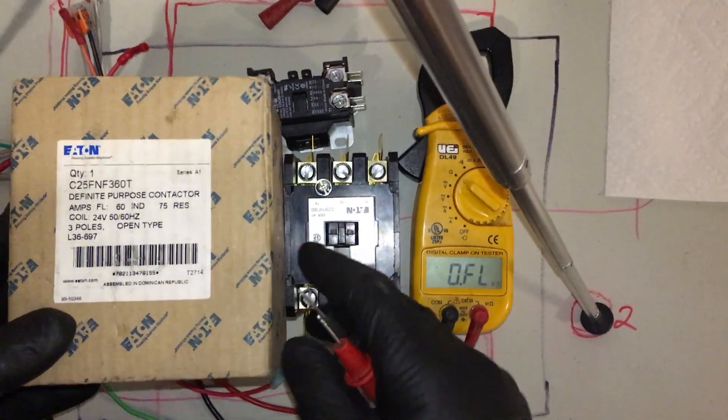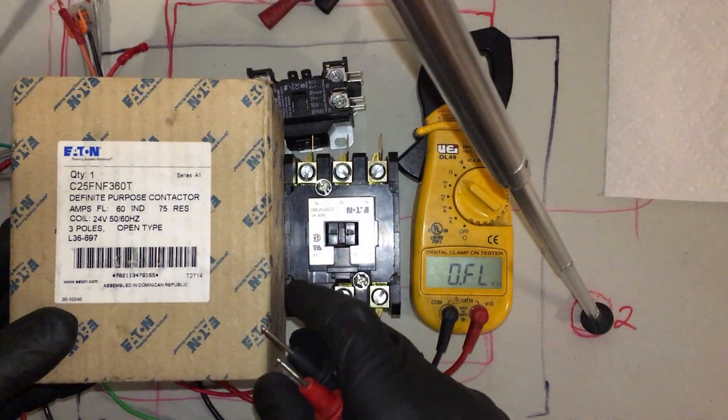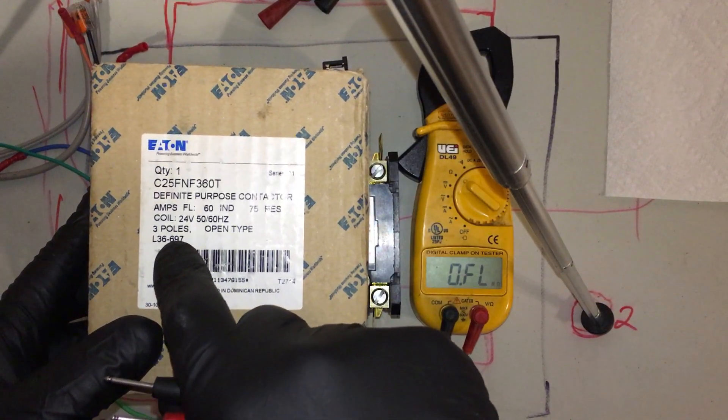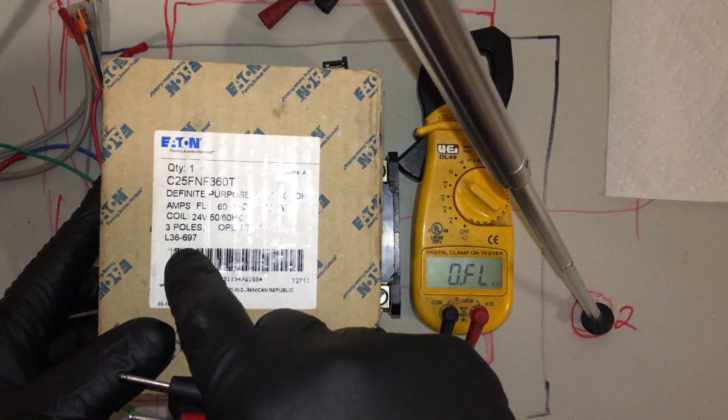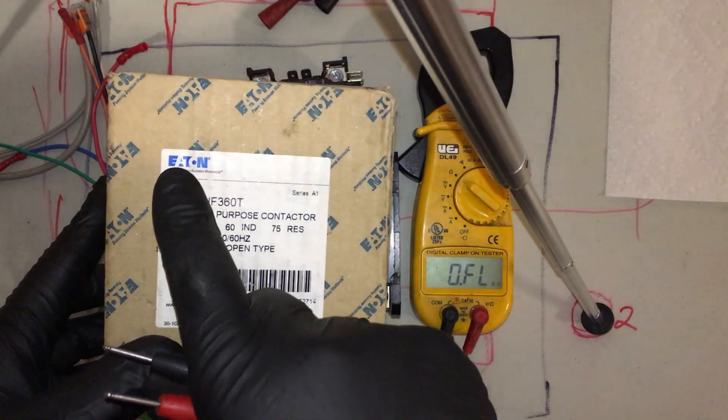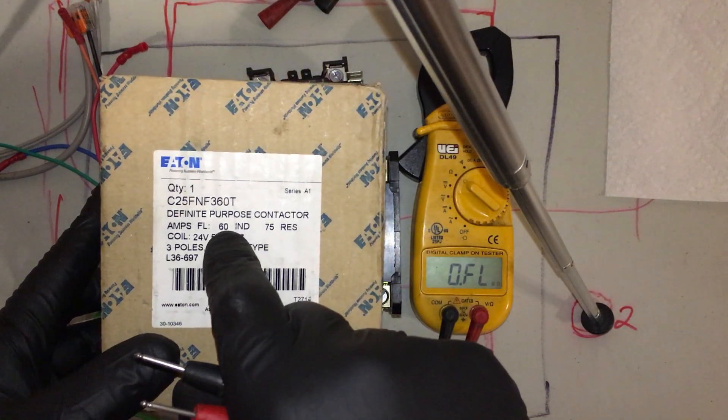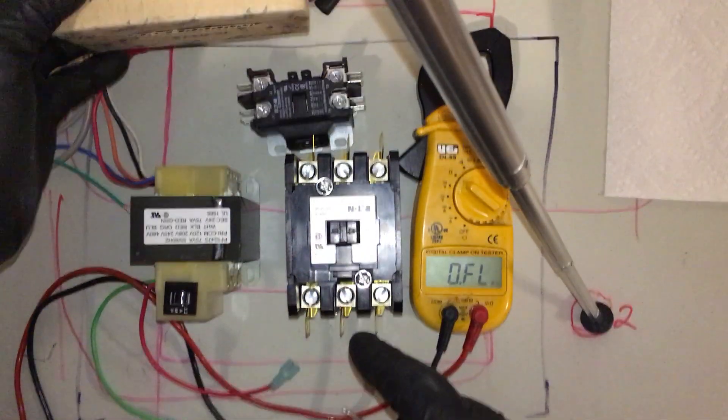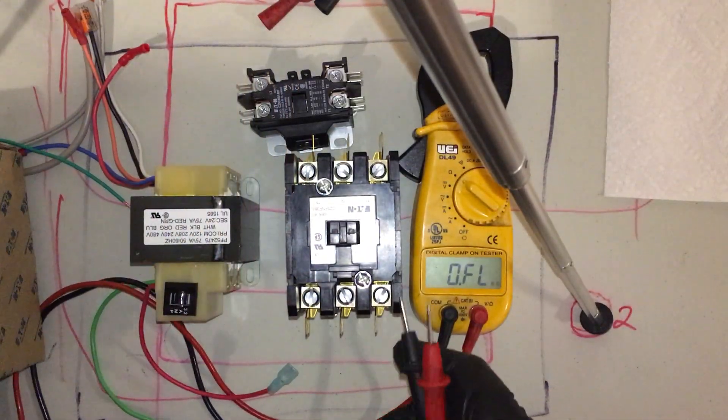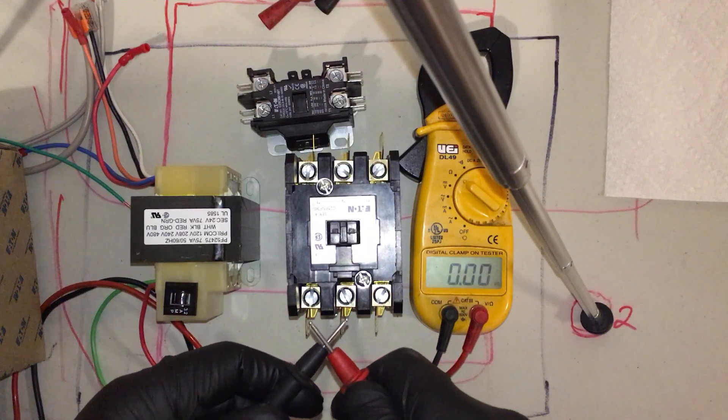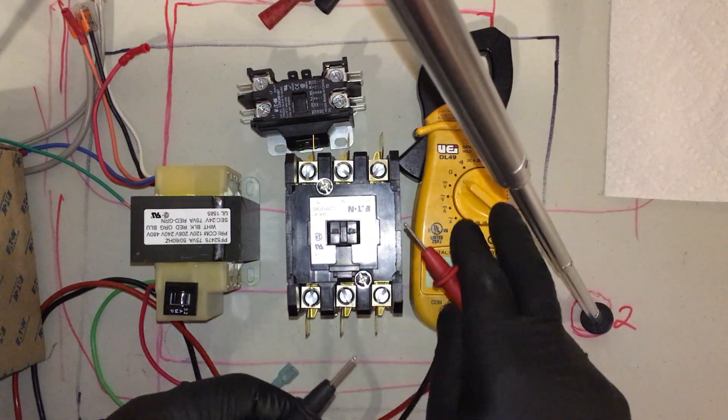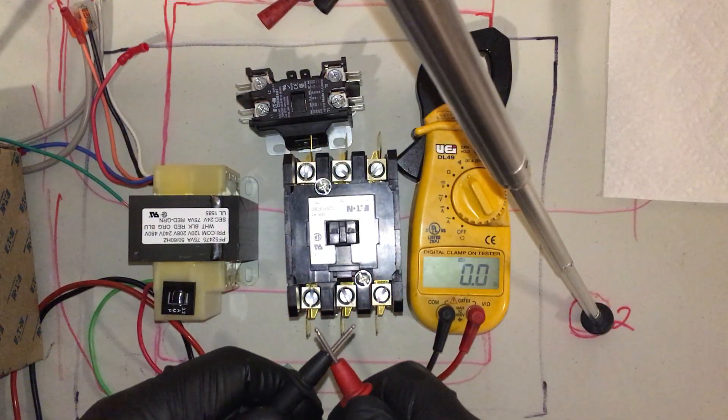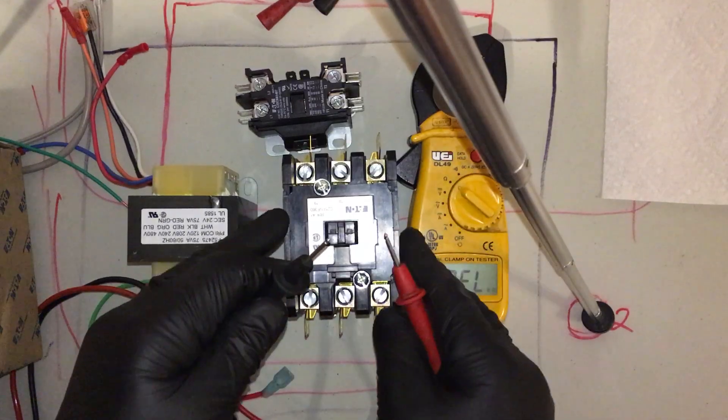This particular contactor right here is a 24 volt coil, as you can see. Three pole. There's your Johnstone number L36697, made by Eaton. This is a 60 amp contactor. This particular contactor ohms out, and you'll see it.